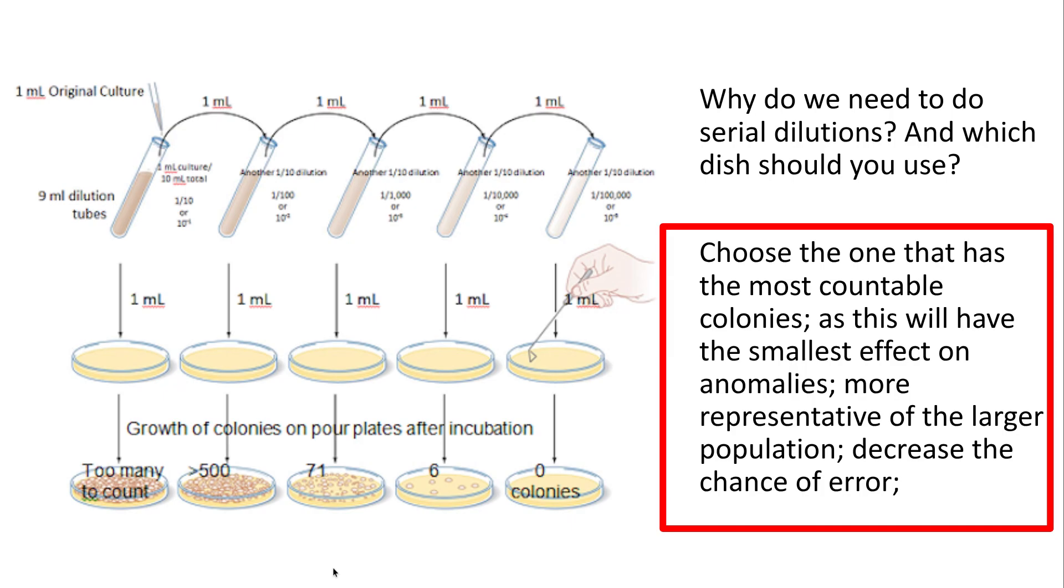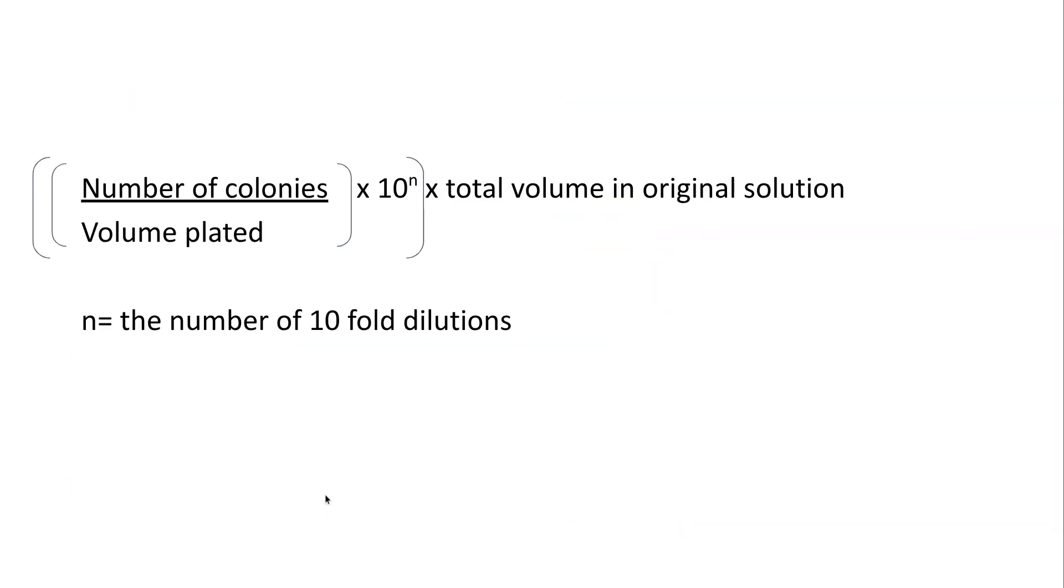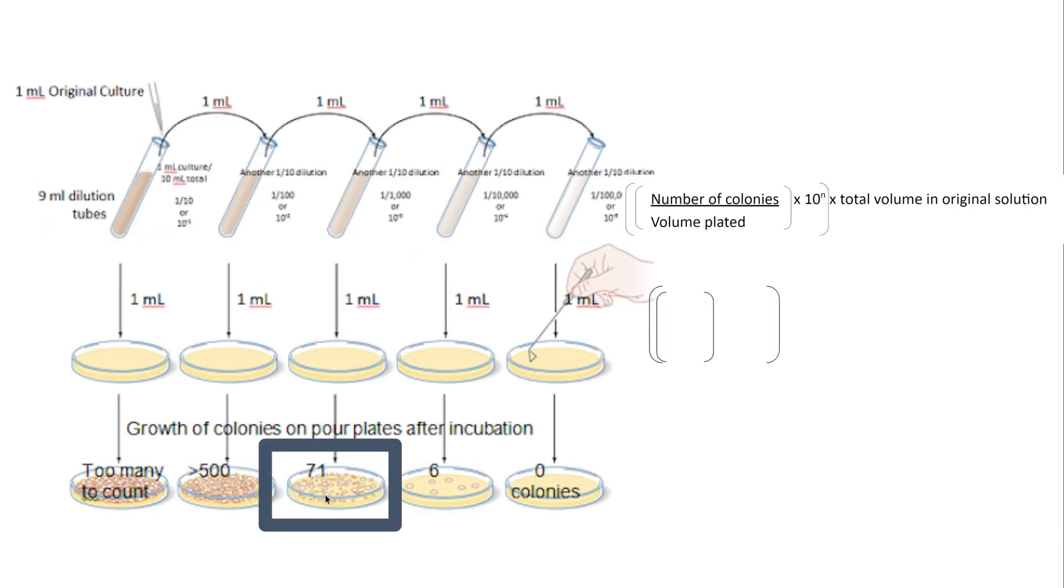So once you've found the plate that you want to use you then put it into a formula that looks like this to calculate the number of colonies within the original culture. So if I chose this plate here, plate 71, I'd put that into my formula like so. This formula is not provided in the exam.